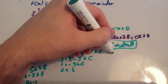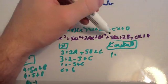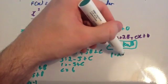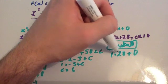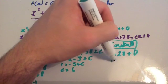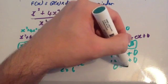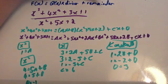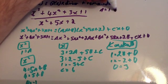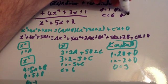Finally, equating the constants: on the left you have 1, on the right you have 2b plus d. Since 2b is minus 2, we get 1 equals minus 2 plus d, so d equals 3. So we have a equals 1, b equals minus 1, c equals 6, and d equals 3.